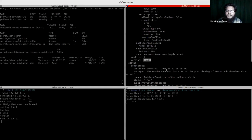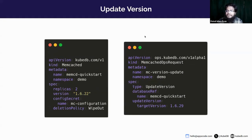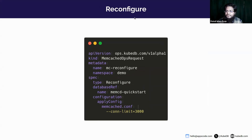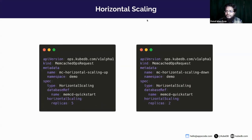Now we'll go through the OpsRequests one by one. First we'll look at version update — currently running version 1.6.22, and we want to update it to 1.6.29. After that we'll look at reconfiguration, then vertical scaling, and finally horizontal scaling.